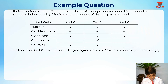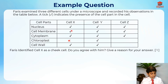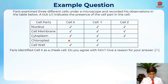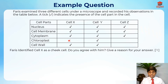Cell X has a nucleus, cell membrane, and cytoplasm, but has no chloroplast. Cell Y has a nucleus, cell membrane, cytoplasm, chloroplast, and cell wall — it has all the cell parts. If a cell does not have chloroplast but has a cell wall, it should be the root hair cell.